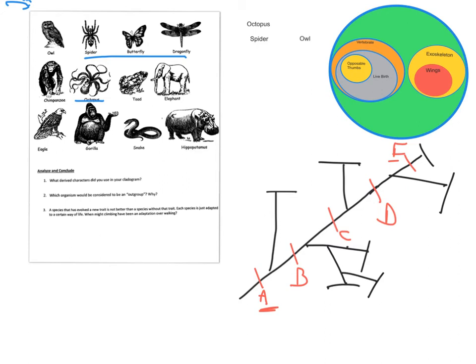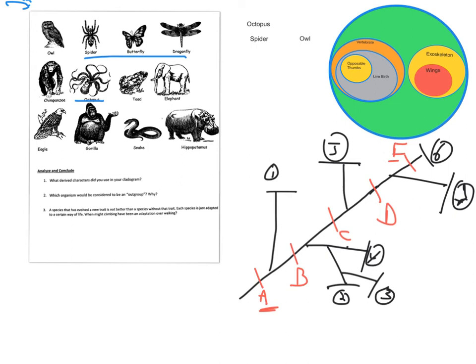Everything that comes after this derived trait has B, but if it comes before this derived trait, it doesn't have C. So you'll have to start placing them. This Venn diagram will help you place and draw it. Draw it much neater than I did — I'm just sketching it out here.